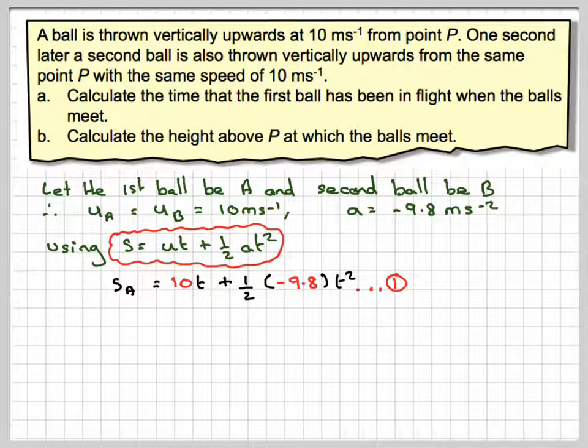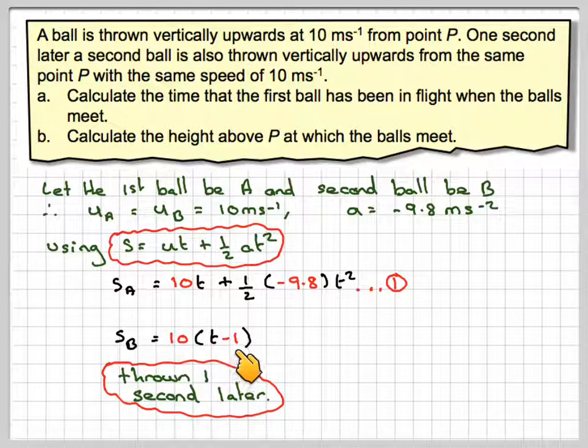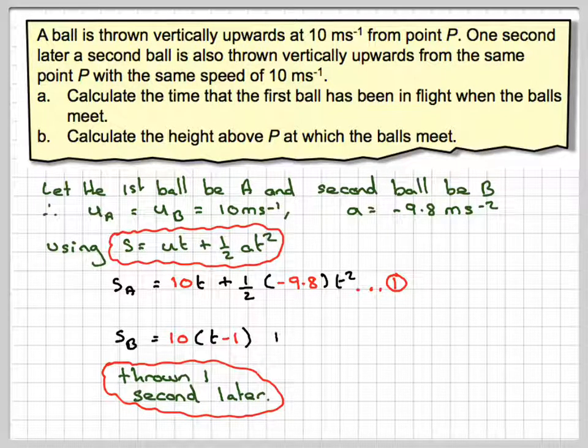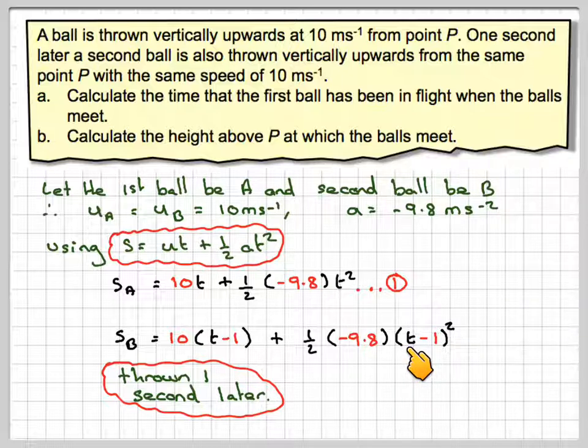Now for ball B, it's launched one second later, so SB will be 10 times (T minus 1) plus half times minus 9.8 times (T minus 1) all squared.